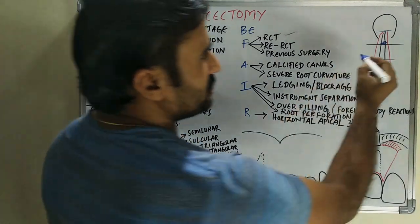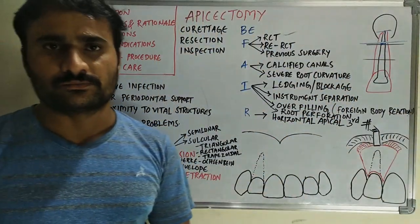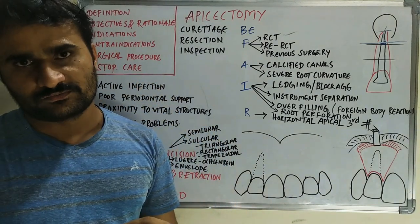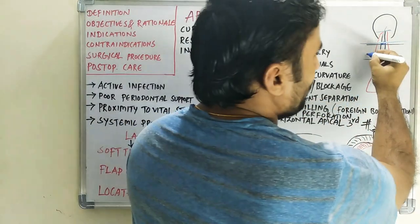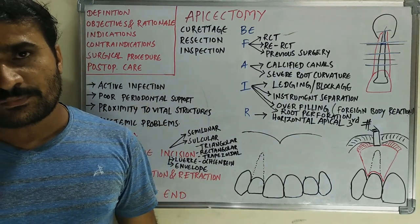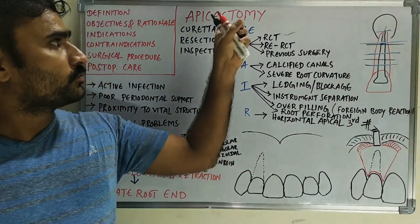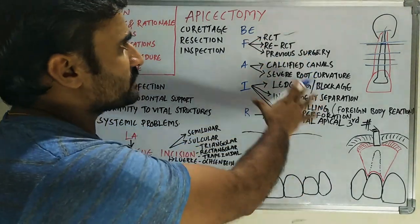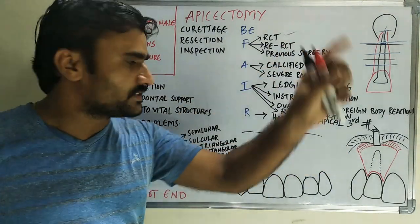R is for root fracture — specifically horizontal fracture in the apical third. If the fracture is vertical, extraction is required. If the root fracture is in the middle or coronal third, extraction is also indicated. But if it is only in the apical third, we can retain the tooth and perform apicectomy to remove that apical third portion.